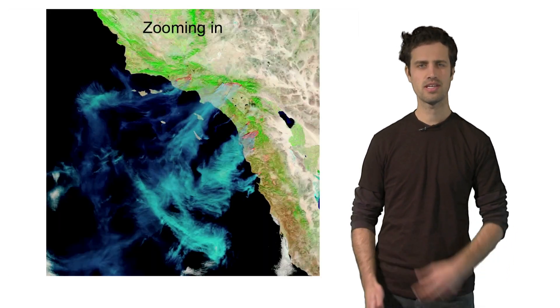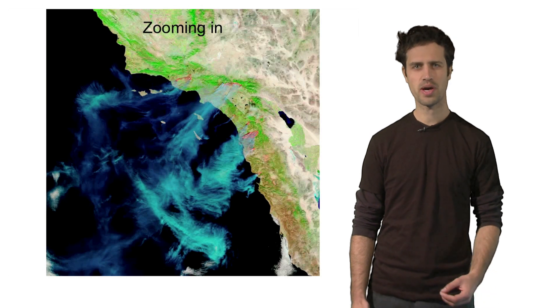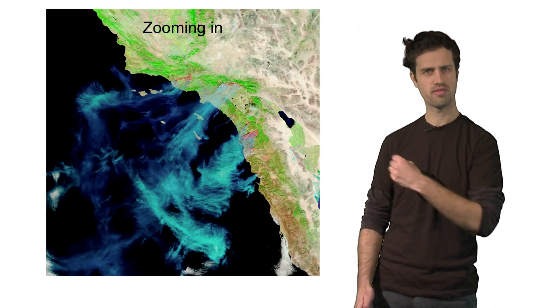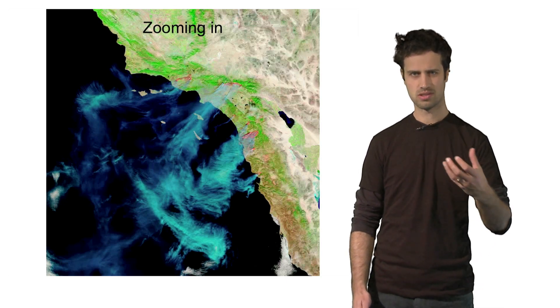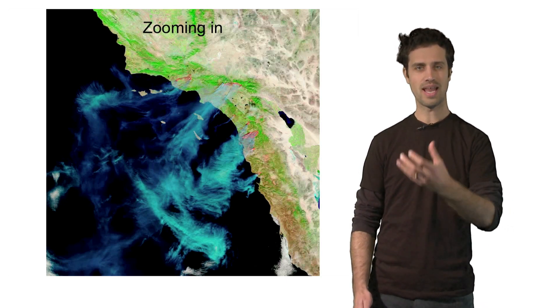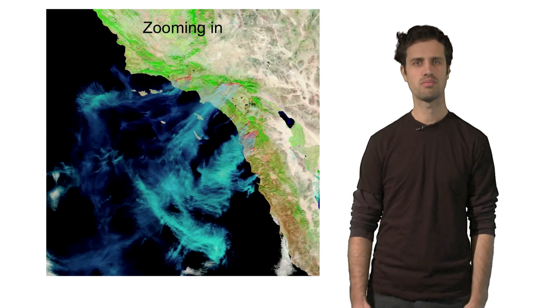So let's zoom in a little bit. Here you see Southern California on a quite unfortunate day. In fact, there's a couple of wildfires going on. The smoke of the wildfires, the water in the ocean, the land mass, all of these things are matter.